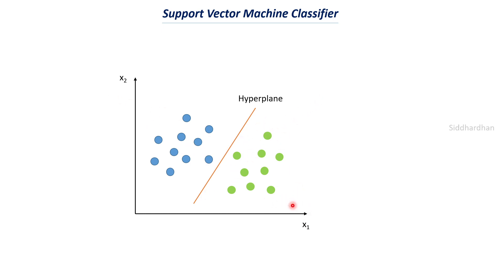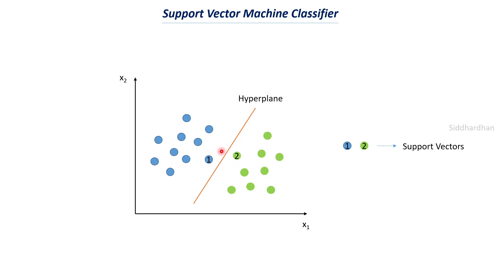In this two-dimensional example with features x1 and x2, there are two specific points labeled one and two. These are called support vectors. Support vectors are the data points which are very close to the hyperplane — the nearest points to it. If the position of the support vectors changes, the position of the hyperplane also changes. So the position of the hyperplane mainly depends on the position of the support vectors.